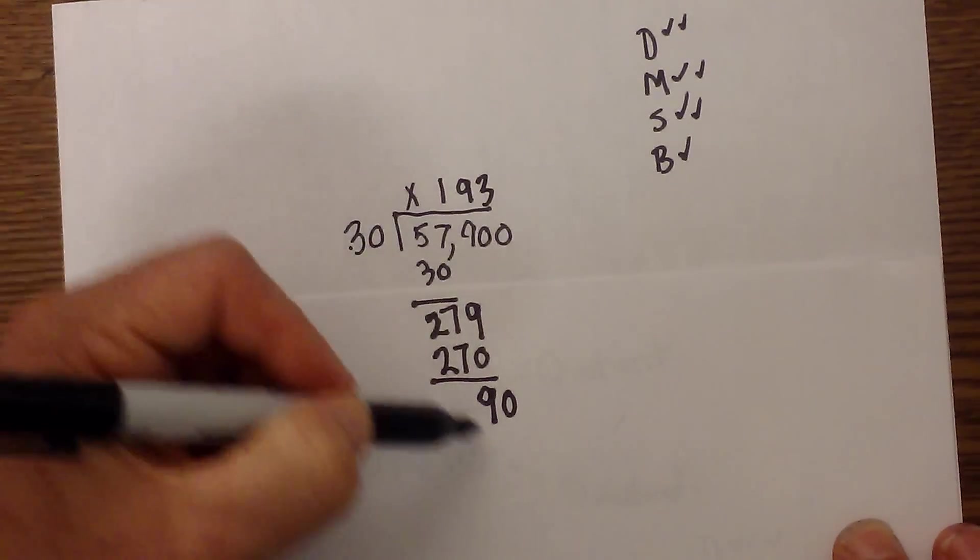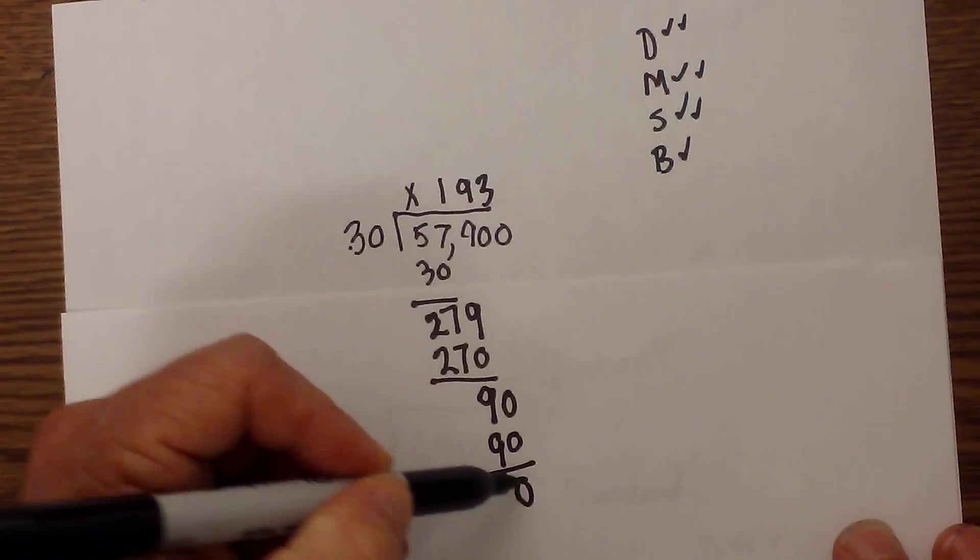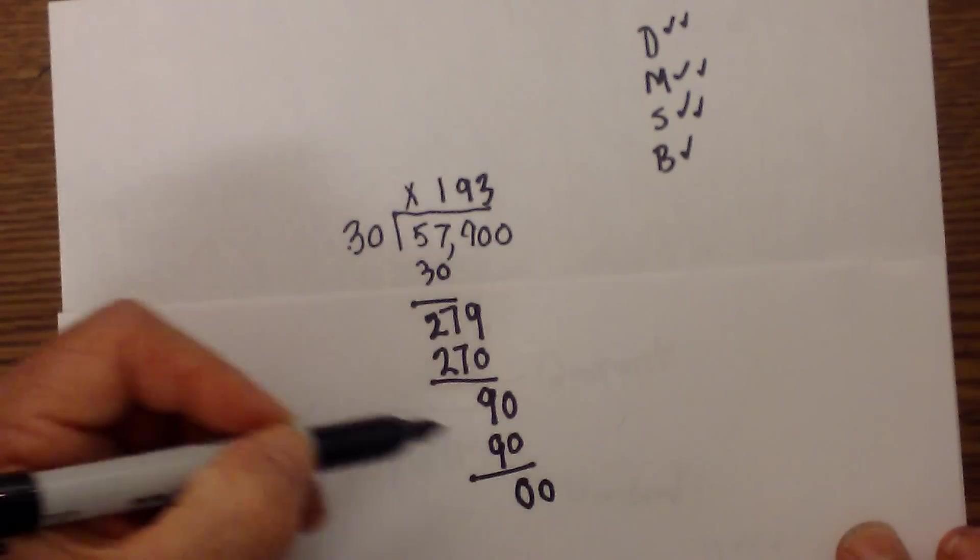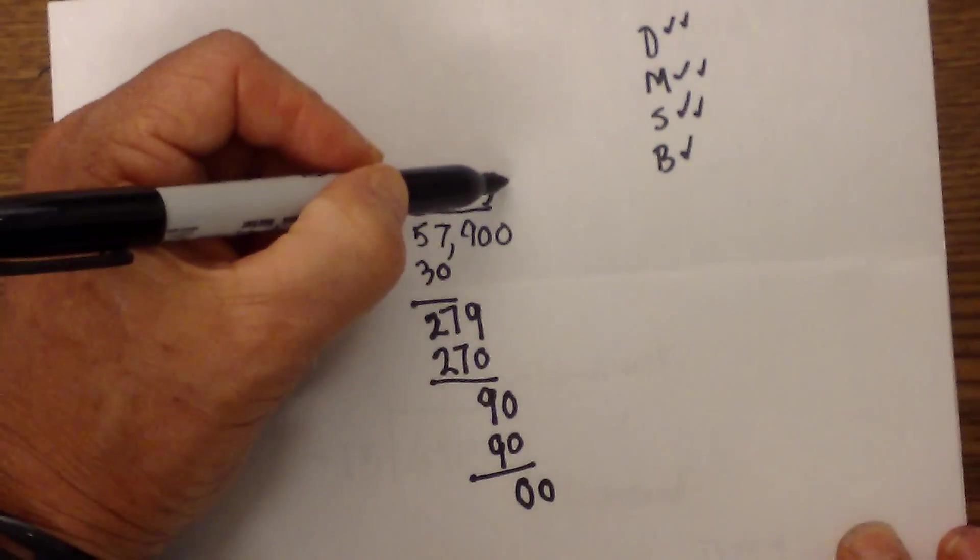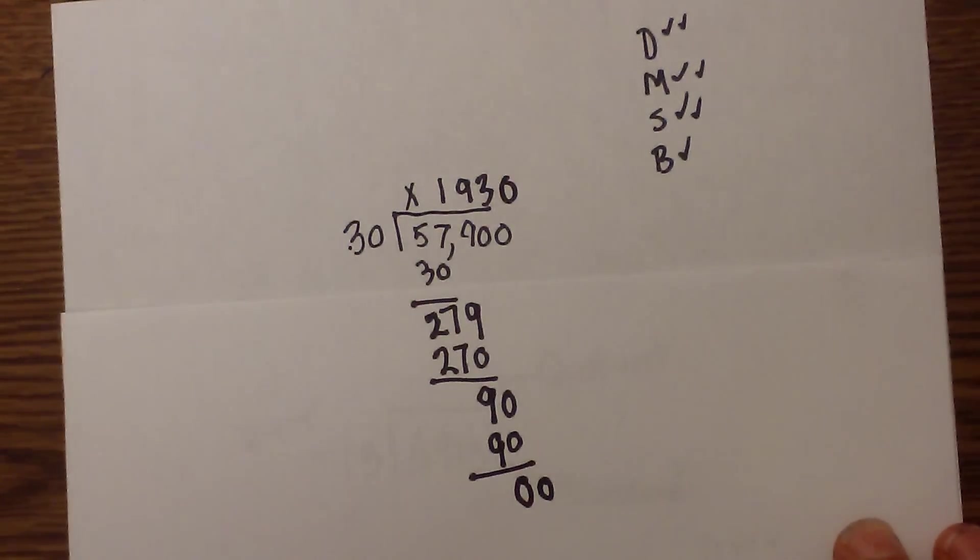3 times 30 is 90. Next we subtract. We bring down. 30 goes into 0 zero times. We have nothing more to bring down, so that is our answer: 1,930.